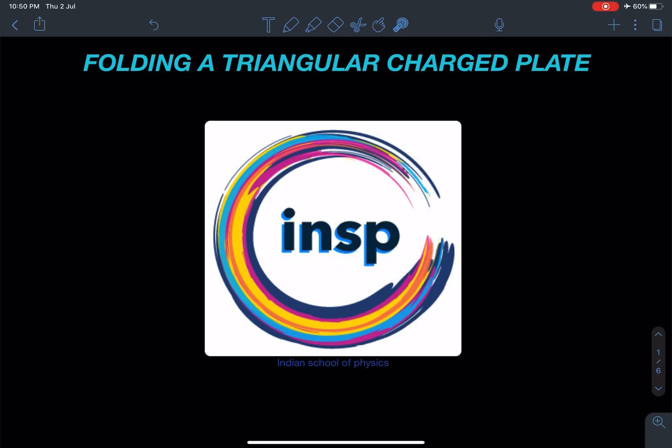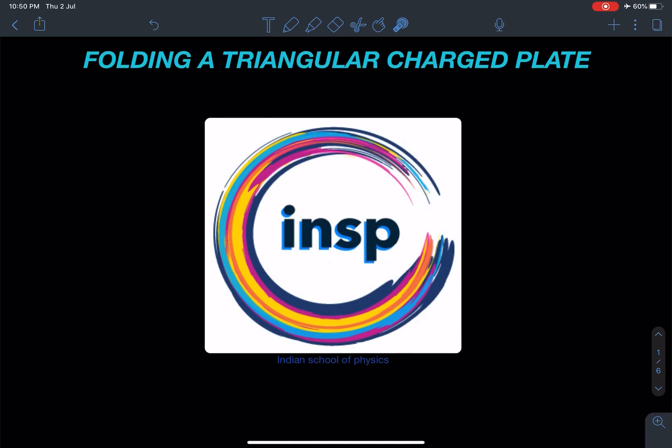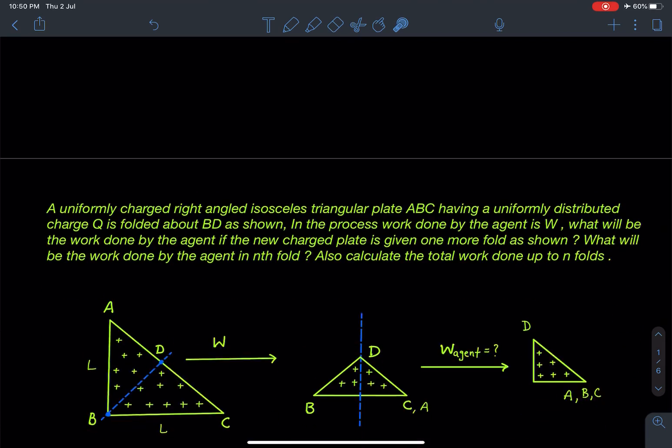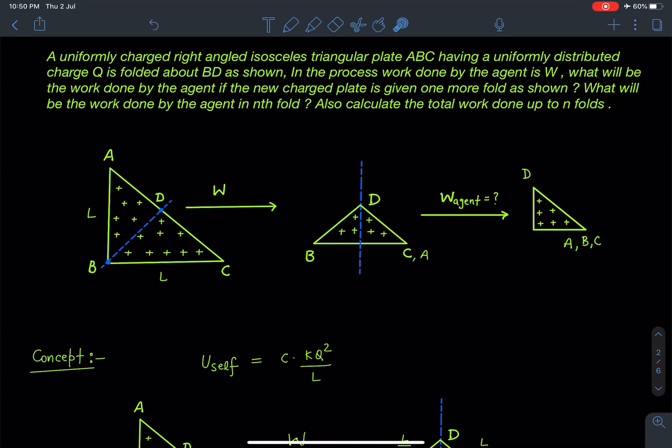So let's discuss this problem. I hope you enjoy it. Here is the statement of this problem. As you can see it's written here: a uniformly charged right angled isosceles triangular plate ABC having a uniformly distributed charge Q